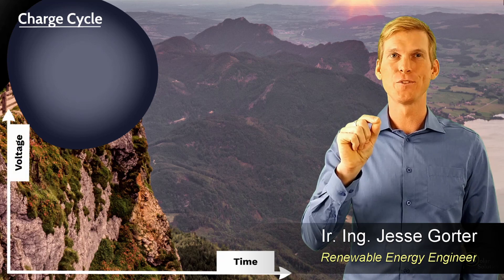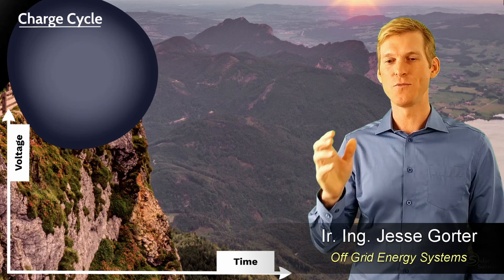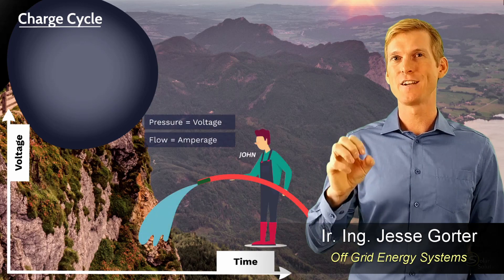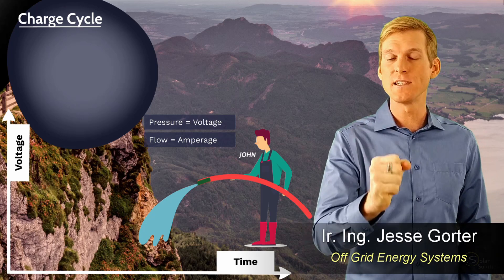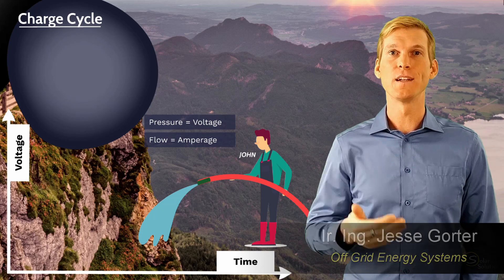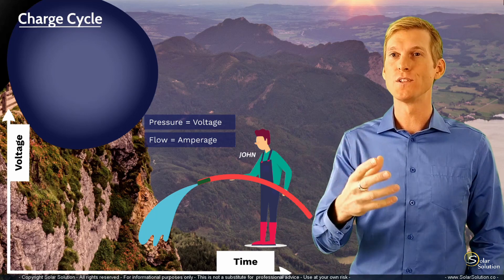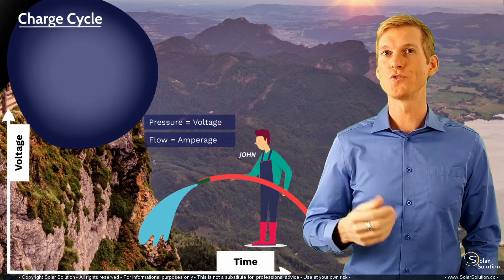And just as a refresher, remember that comparison that I drew between a water hose and electricity. So the pressure inside of the hose, the water pressure, you could compare it to the pressure of electricity, which is indicated with the voltage or the volts of electricity, and the amount of water running through the hose, so the flow of water, you can compare it to the amperage, or the current running through an electrical circuit.